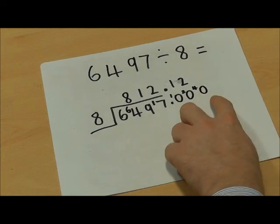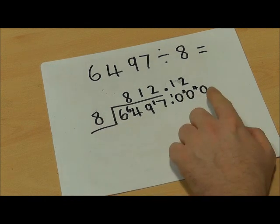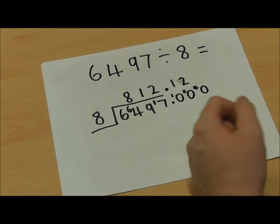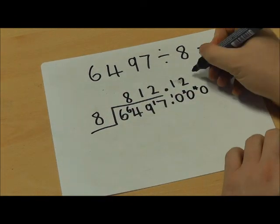And I can keep adding 0s until I make this number go in exactly. Luckily on this occasion 8 goes into 40 exactly. 8, 16, 24, 32, 40, which is 5 times.